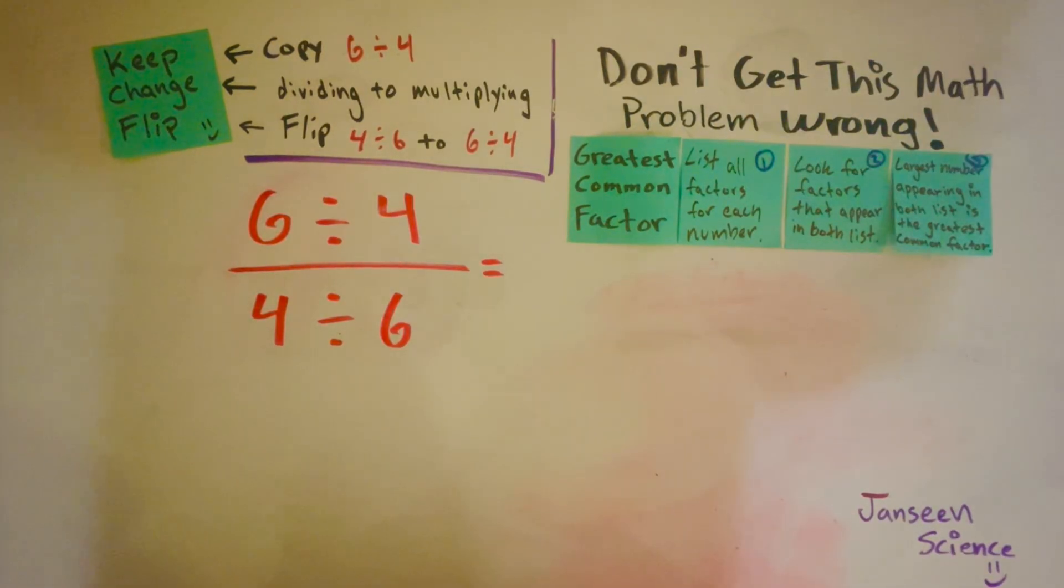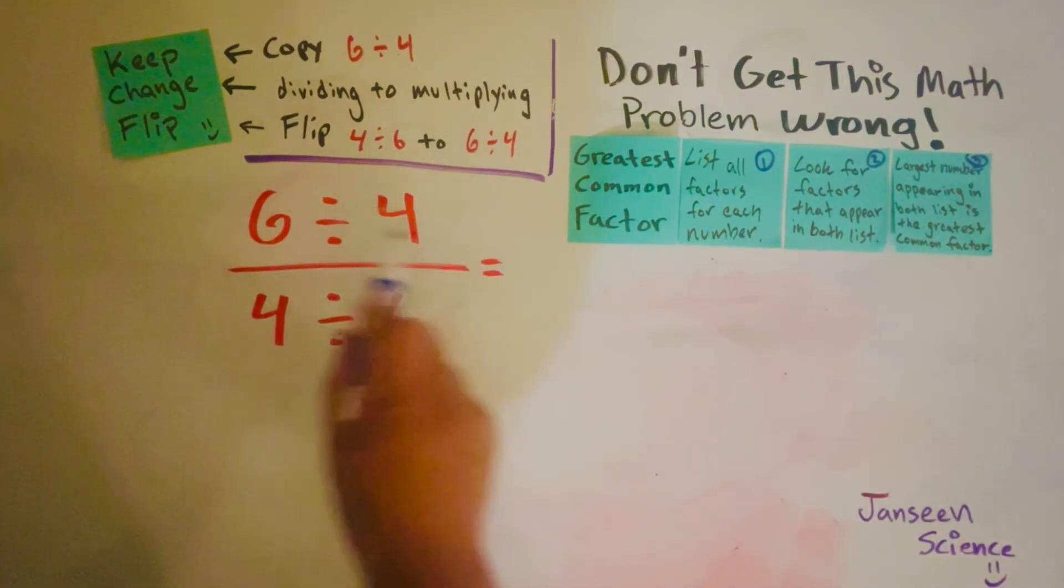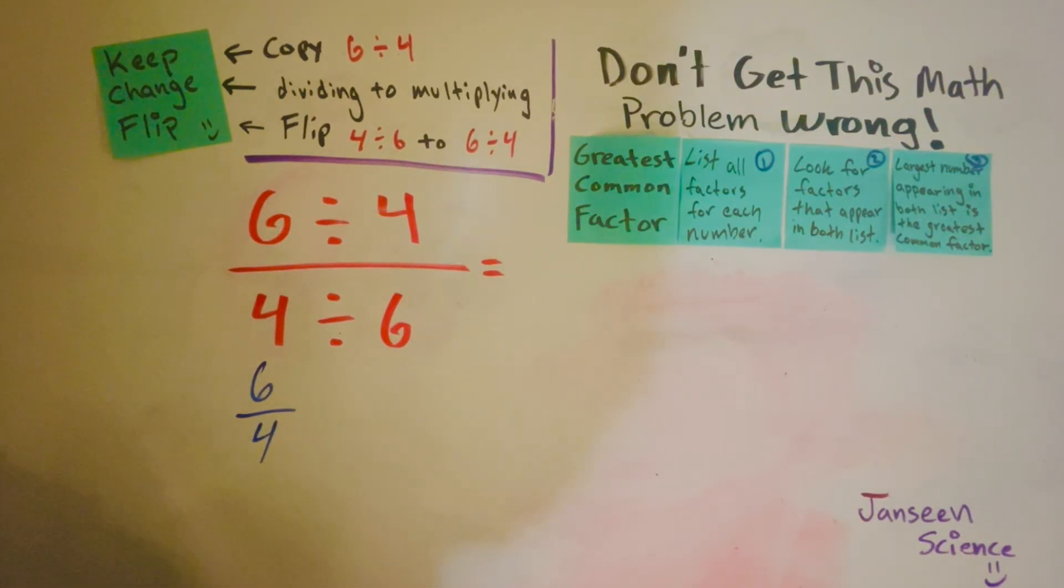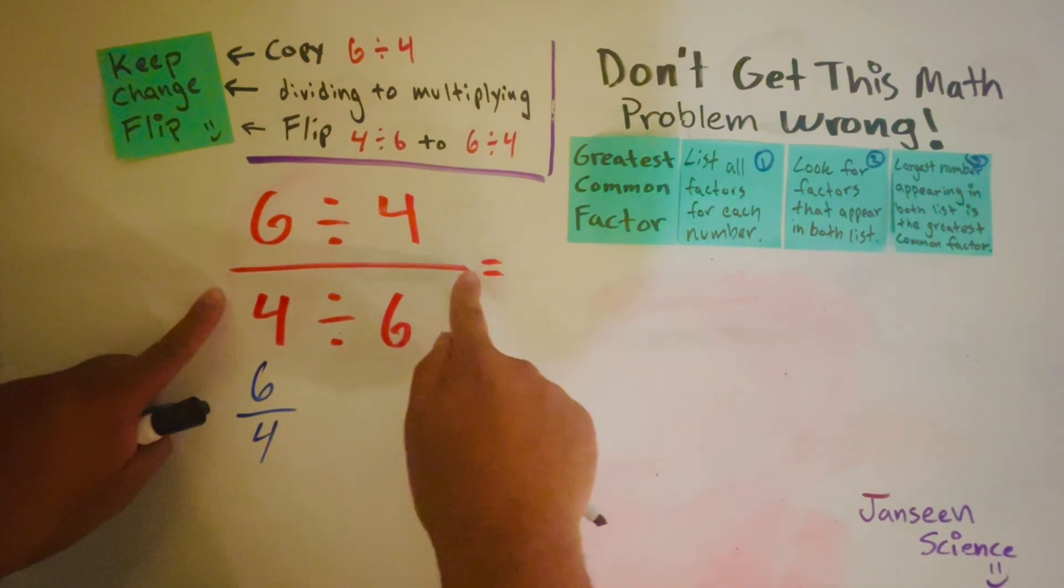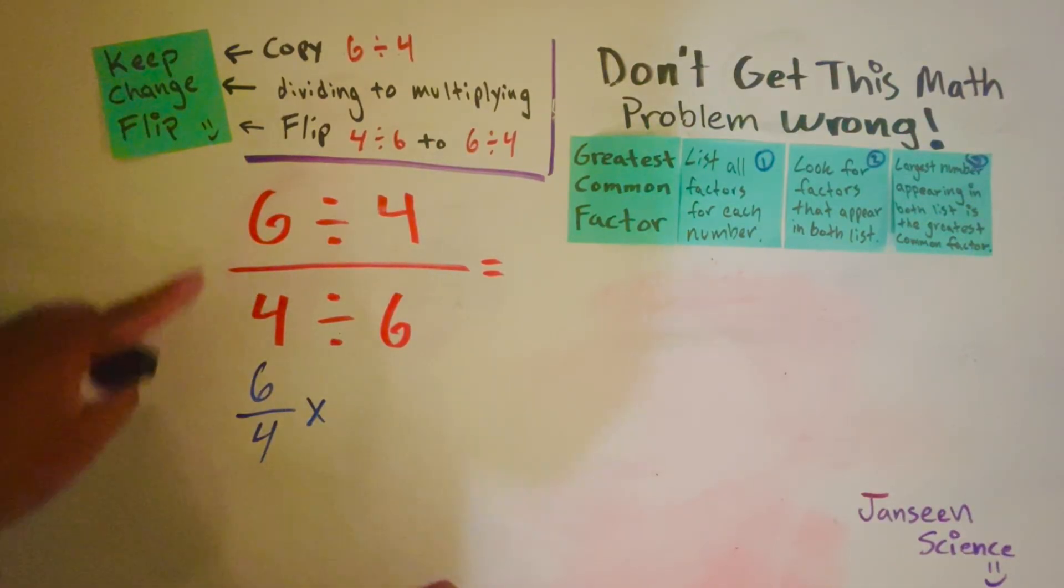We're going to use that method to start. First, copy 6 divided by 4 in a fraction form, 6 over 4. Next, we want to change that division line to multiplication.